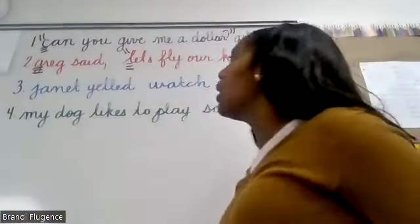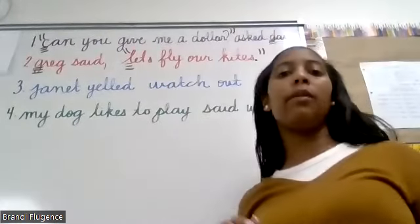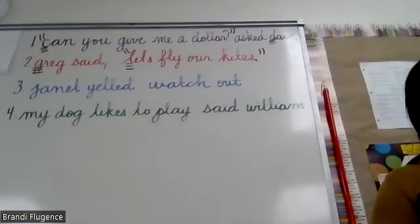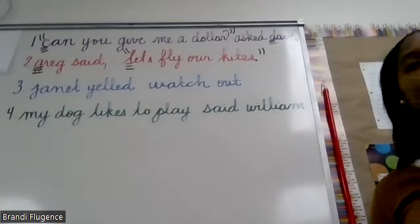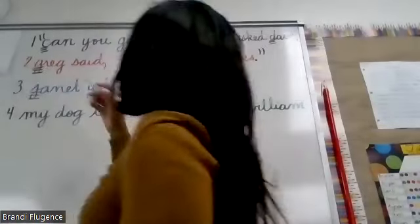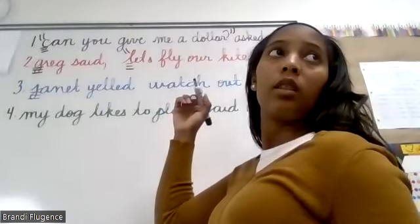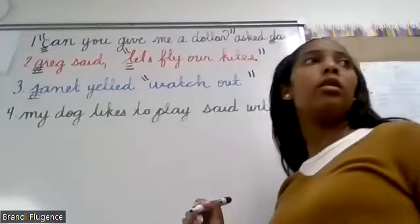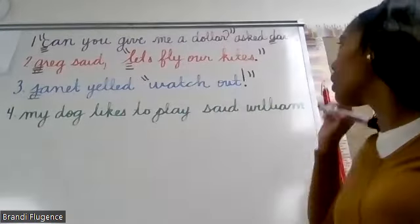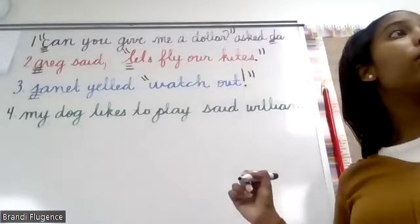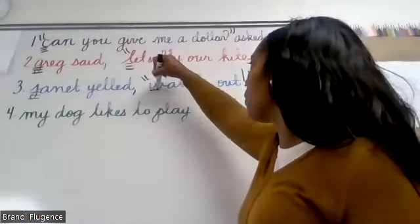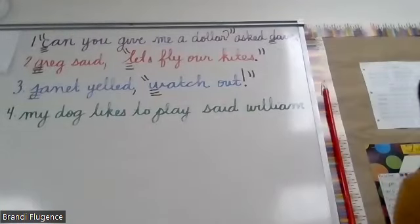Number three: Janet yells, 'Watch out!' How would we write this one correctly? Capitalize J in Janet, put quotation marks on 'Watch out,' and use an exclamation mark because she's shouting — that's an exclamation. Also capitalize the W in 'Watch.'